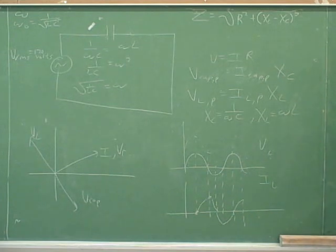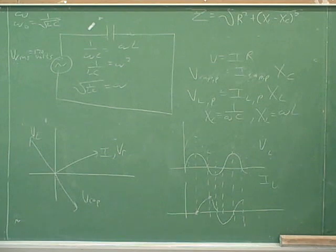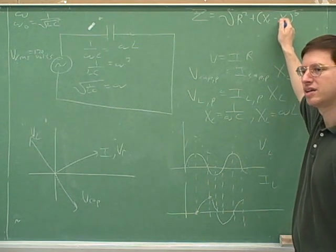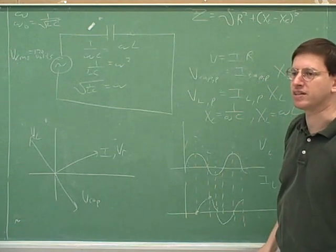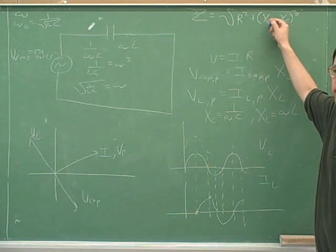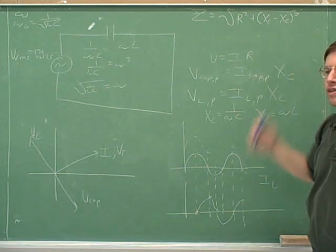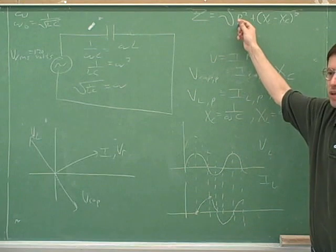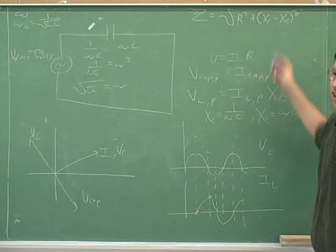Suppose that we're at the resonant frequency — what would the impedance be? At the resonant frequency, the two reactances are equal. When those reactances are equal, this term cancels out, and Z just equals R. So that's one of the significances of the resonant frequency: when you're at the resonant frequency, it's as if the inductor and the capacitor weren't there at all. They cancel each other out, and the total resistance is just the resistance of the resistor.